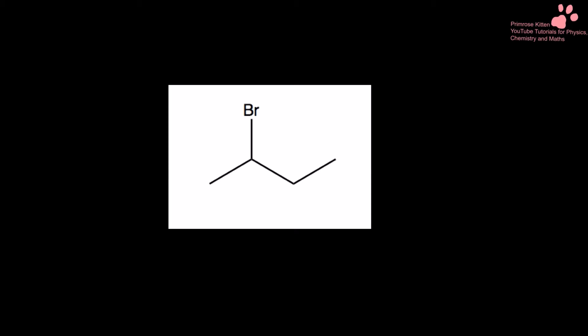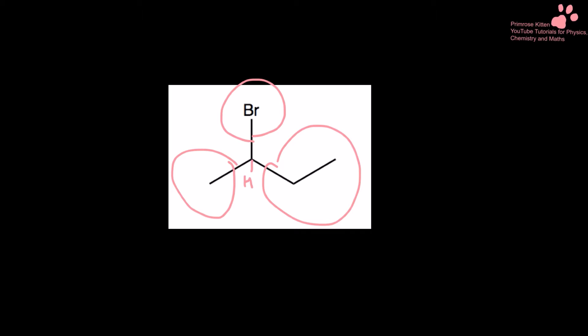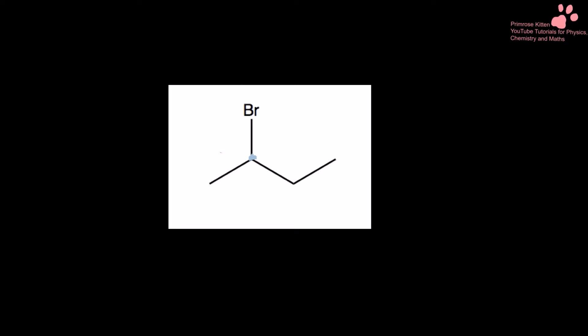So when we are trying to identify a chiral carbon, we need to find a carbon that has four different groups on it. You're going to have to get quick at this because the exam throws nasty ones at you. The easiest way at the beginning is just to work your way through. This carbon here is not chiral because it's got three hydrogens off it. This carbon here is chiral because it has this group, this group, this group, and then the hydrogen we haven't written on. The rest aren't chiral - this one has two hydrogens, and this one has three hydrogens. So the only chiral carbon is that one in the middle.